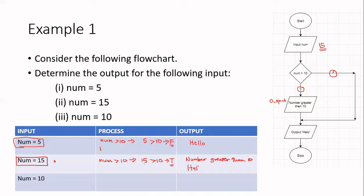So this outputs two statements. When I input 15, it tells me 'number greater than 10' and it tells me 'hello'. But when my input was 5, it only output hello. That's just the way the flowchart is behaving.